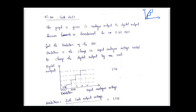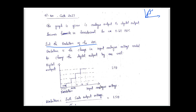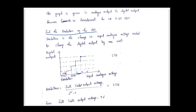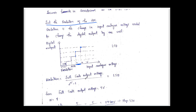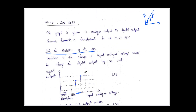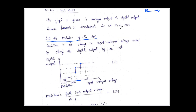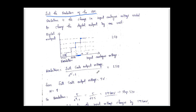In this question, first of all, we have to find the resolution of the ADC. Resolution is the change in input analog voltage required to change the digital output by one unit. From this level to that level, if you want to change the digital output by one step, we need this much analog voltage — that is our resolution. We can find it using the equation: full-scale output voltage divided by (2 raised to n minus 1), where n is the number of bits, which is 8 here.